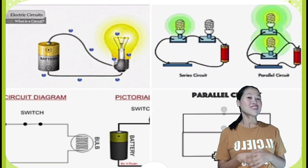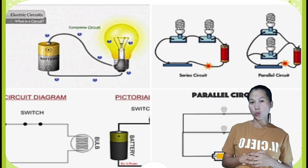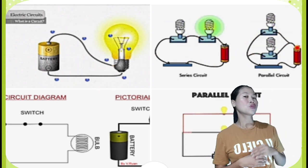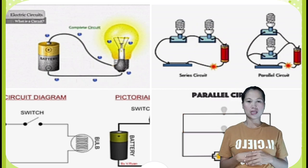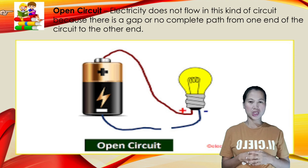When the switch was connected to the wire, the circuit was closed and so the electricity flows through the circuit. And what do you mean by open circuit?